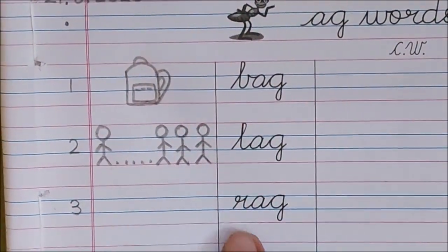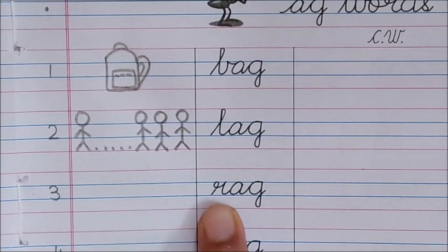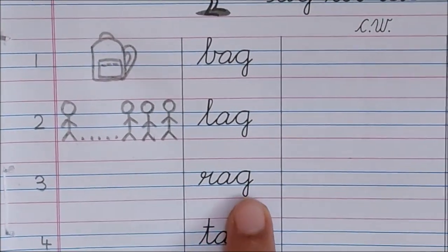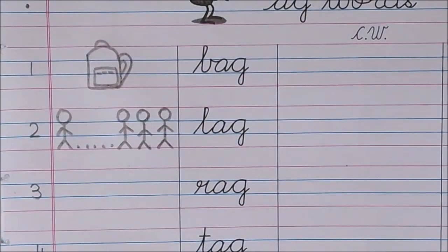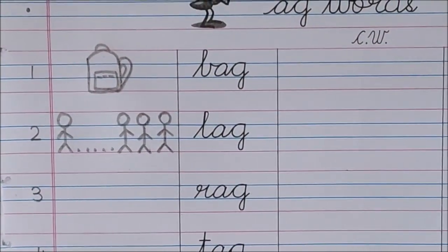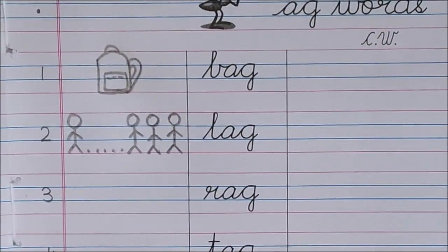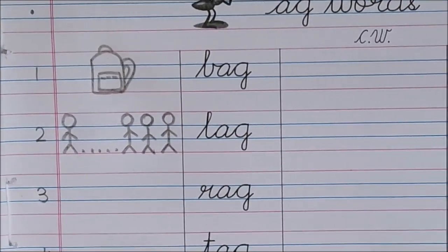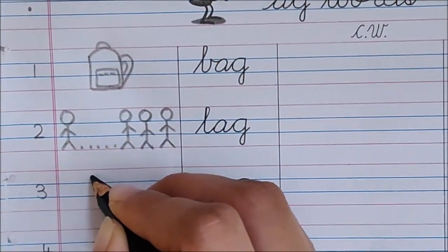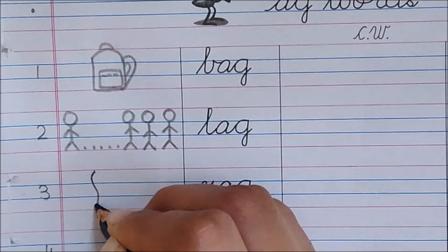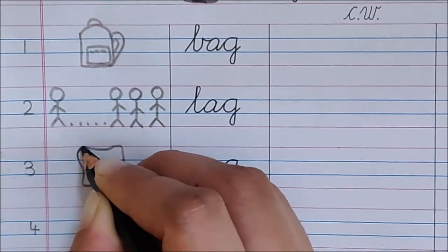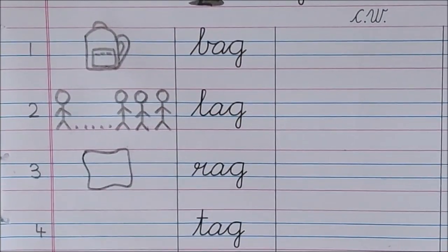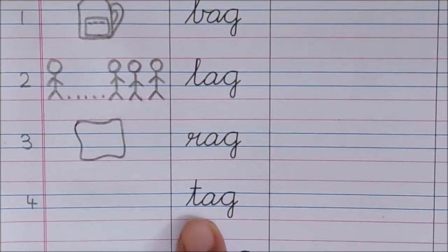Now let us read the next word. Ra, ag, ga, rag. Rag means an old cloth which is used for cleaning or dusting. So, let us draw here a rag picture. See, this is a rag.